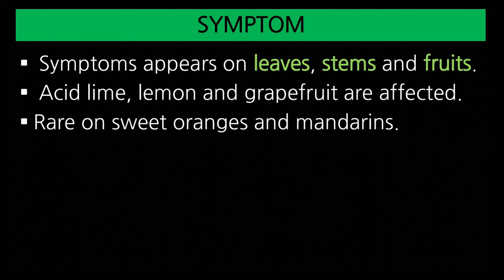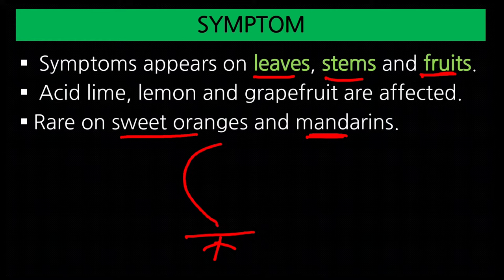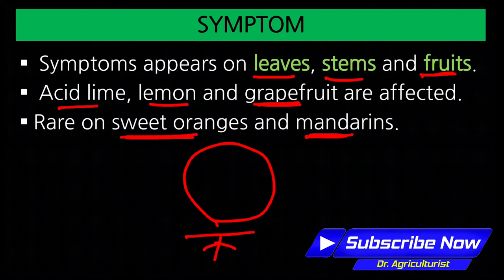Coming to symptoms — symptoms appear on leaves, stem, and fruit. Acid lime, lemon, and grapefruits are commonly affected. Sweet orange and mandarin are rarely infected. This disease affects all aerial parts except the root. Infection is higher in acid lime, lemon, and grapefruit, while sweet orange and mandarin show less infection.